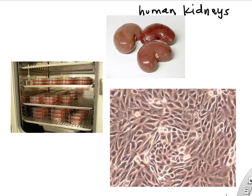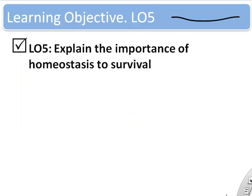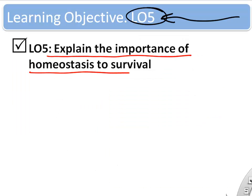It might surprise you that you can actually take human organs, digest out the living cells, and keep them in an incubator if you keep the cells supplied with everything your body normally gives them. This leads us to our next learning objective: explain the importance of homeostasis to survival.